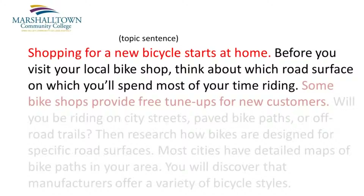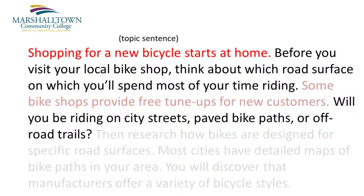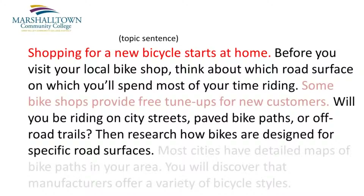How about the next sentence? Will you be riding on city streets, paved bike paths, or off-road trails? Since this is a question that people should ask themselves before buying a bike, I'm going to say that yes, this supporting detail is very much related to the topic sentence. How about the next sentence? Then research how bikes are designed for specific road surfaces. Again, this sentence is very much related to the topic sentence, so it also stays.